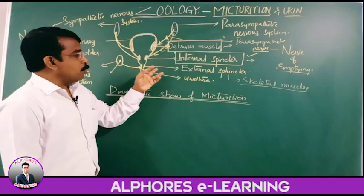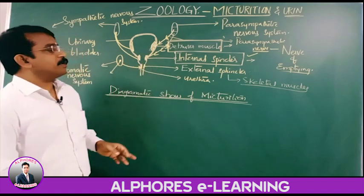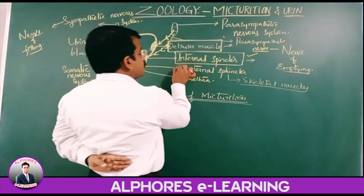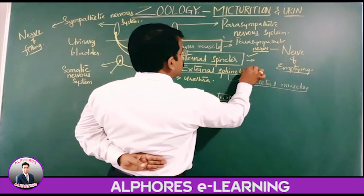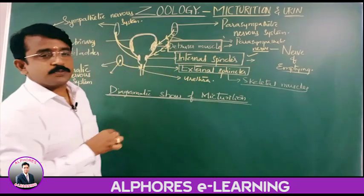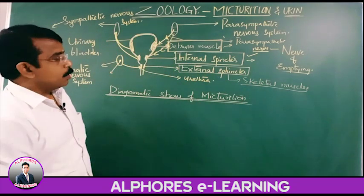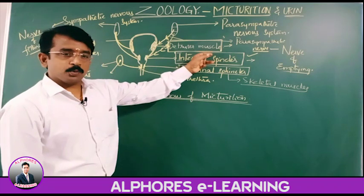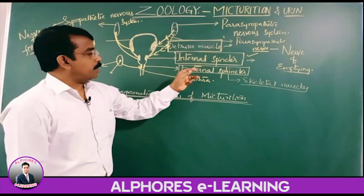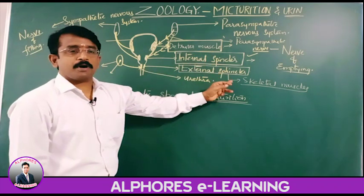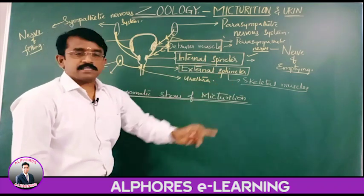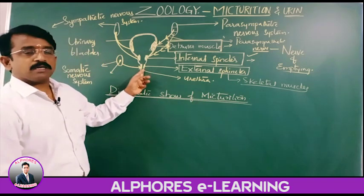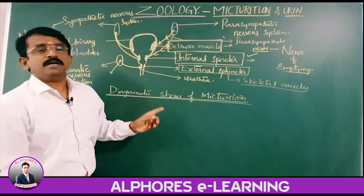One more sphincter is present, named the external sphincter. The external sphincter is made up of skeletal muscles — internal sphincter is of smooth muscles, whereas the external sphincter is made up of skeletal muscle. Through the urethra, the urine is sent out.